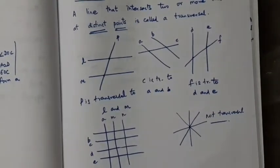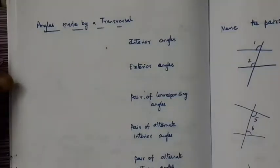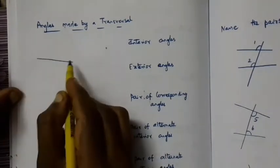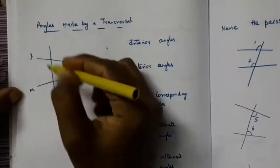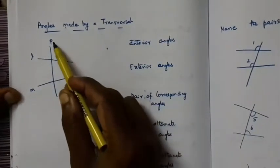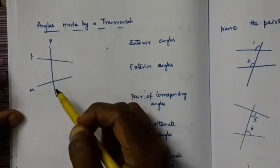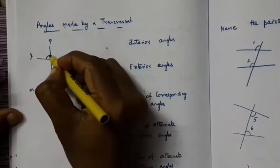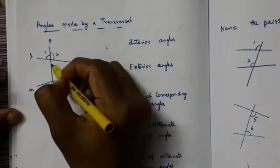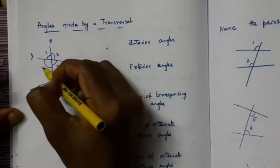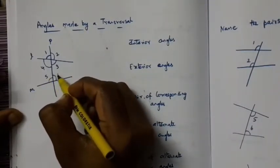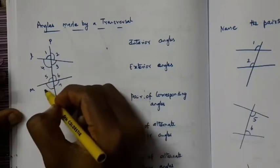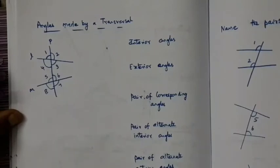Next we will study what angles are made by a transversal. I am drawing two lines — let me name them L and M — and drawing a transversal line P. P is transversal to lines L and M. At the first intersection I name the angles: angle 1, angle 2, angle 3, angle 4; and at the second intersection: angle 5, angle 6, angle 7, angle 8.